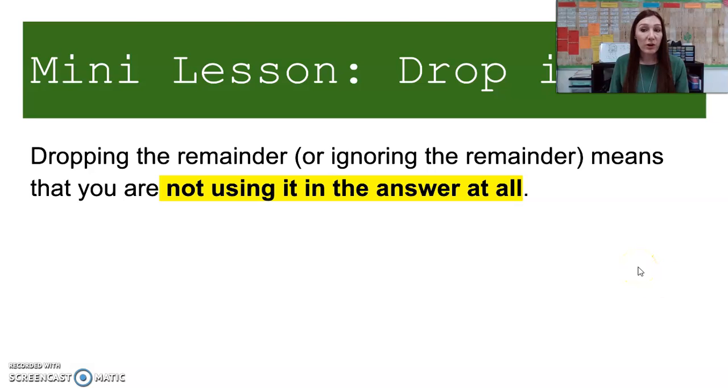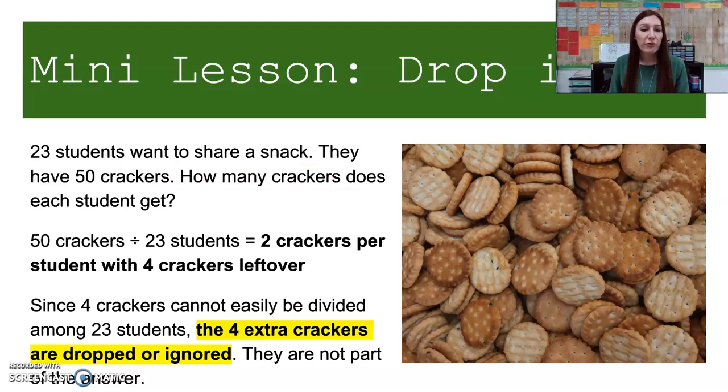Dropping the remainder or ignoring the remainder means that you are not using it in the answer at all. For example, 23 students want to share a snack. They have 50 crackers. How many crackers does each student get? So 50 crackers divided by 23 students equals two crackers per student with four crackers left over. Since four crackers cannot be easily divided among 23 students, the four extra crackers are dropped or ignored.